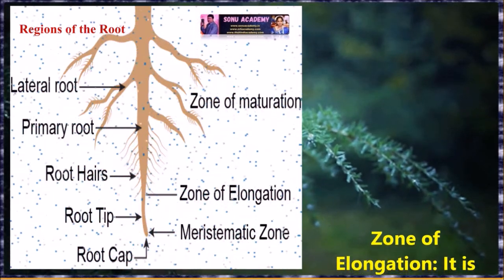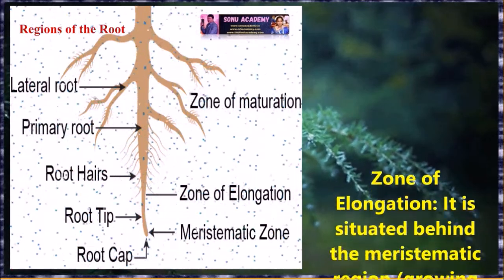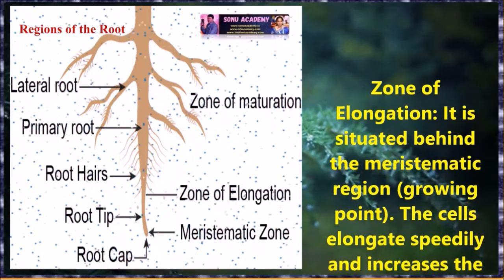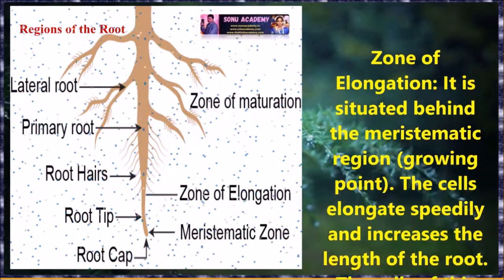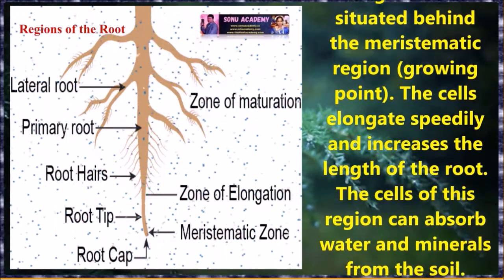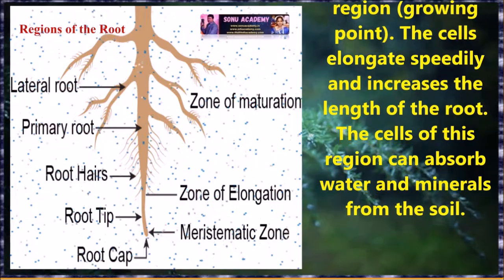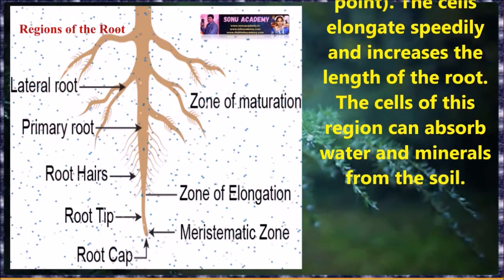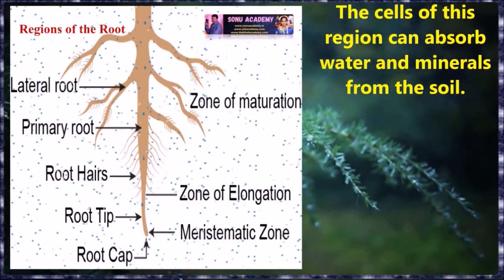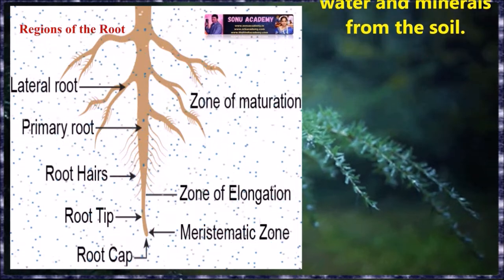The third one is the zone of elongation. The zone of elongation is situated behind the meristematic region, i.e., the growing point. The cells elongate speedily and increase the length of the root. The cells of this region can absorb water and minerals from the soil.